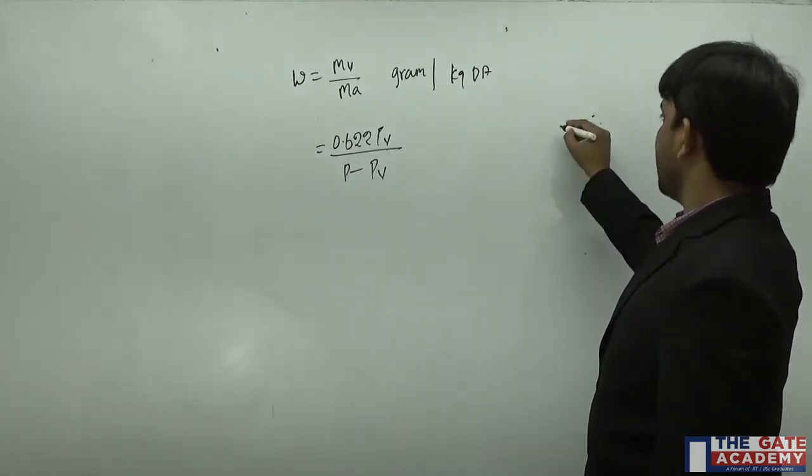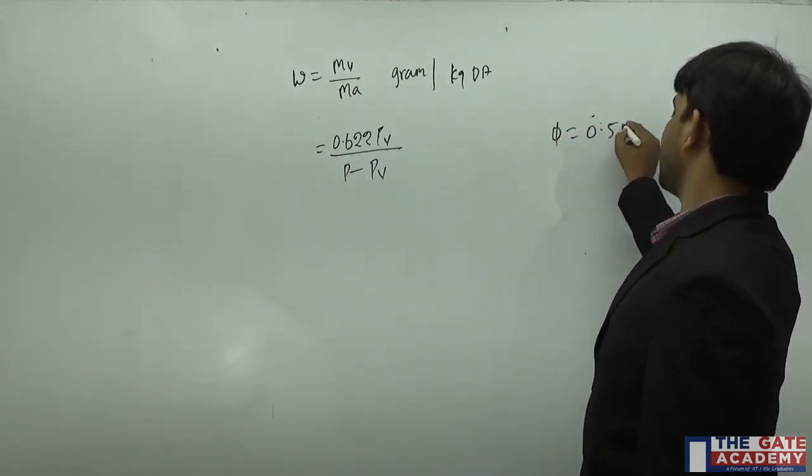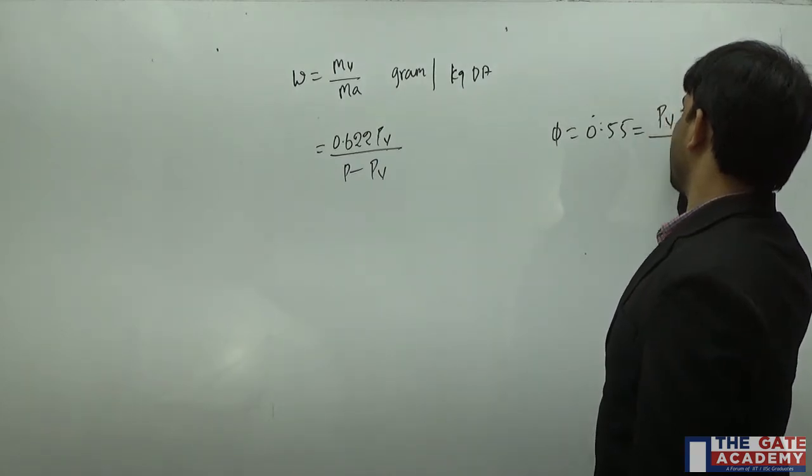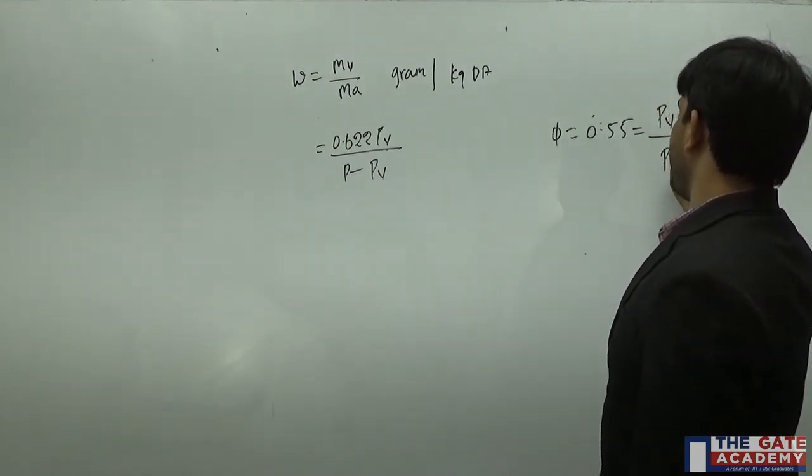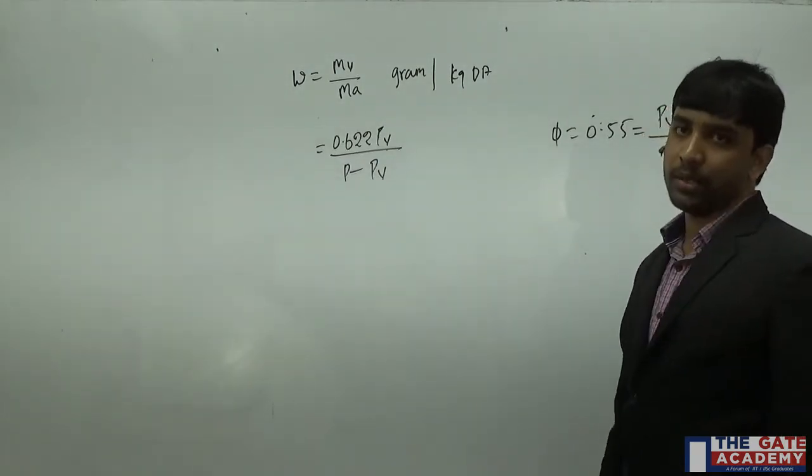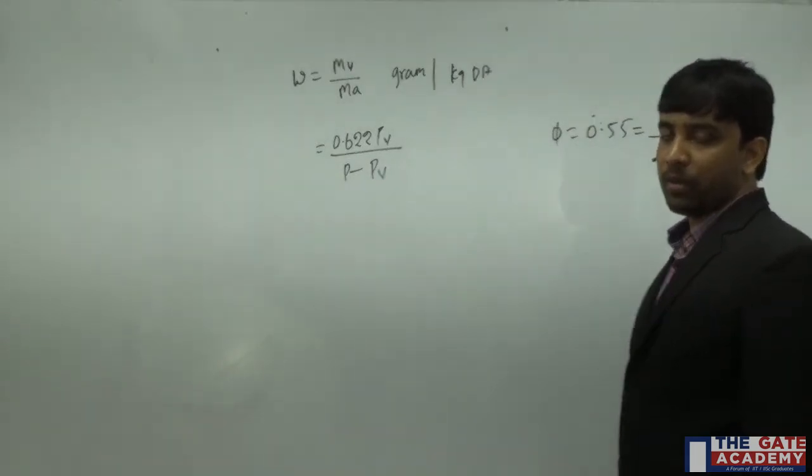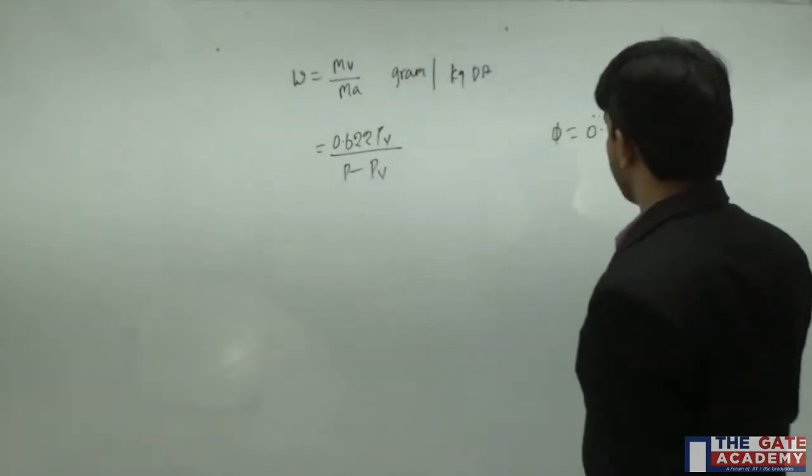Now, he is saying that the relative humidity is 55%, 0.55, it is nothing but the ratio of partial pressure of water vapor to partial pressure of water vapor under saturated condition. He gave partial pressure of water vapor under saturated condition as 4246.